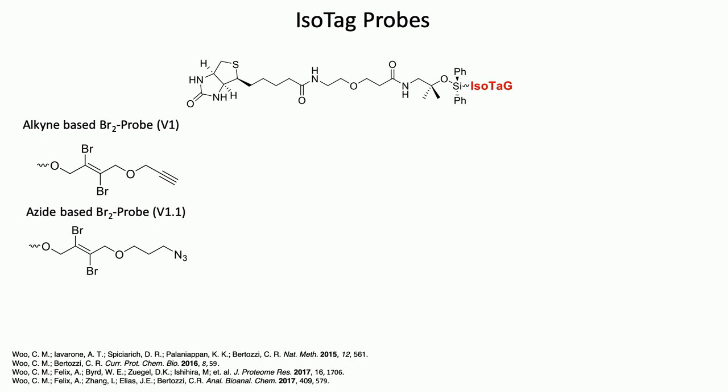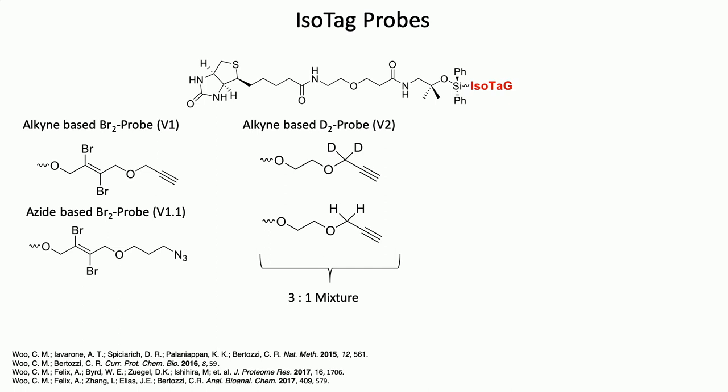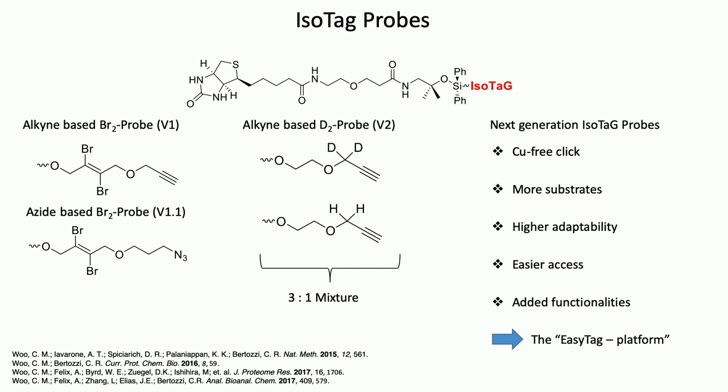So the probes are pretty important for this technology. The probes that we design have a capture element — that's the biotin group shown in the top structure — then a linker group that can be cleaved later to liberate them from the streptavidin capture bead. The isotag part is the portion with those atoms that allow a pattern in the mass spec. Shown on the right are the first generation probes with bromine atoms, but now we have our deuterium probes that we're sharing freely with the community. Each probe has a clickable group — an azide or an alkyne — to click onto the azide-labeled sugar. These new generation ISOTAG probes are compatible with click chemistries or copper-free click chemistries, allow labeling of many different sugar types, are adaptable to many different experimental platforms, are easy to synthesize but also available from us, and they enable what we call the easy tag platform.